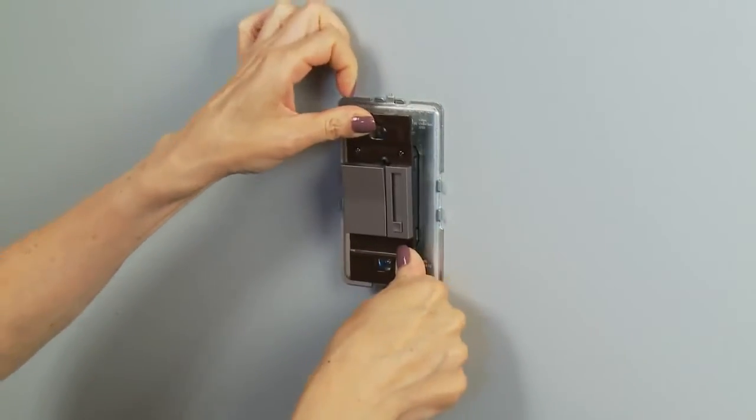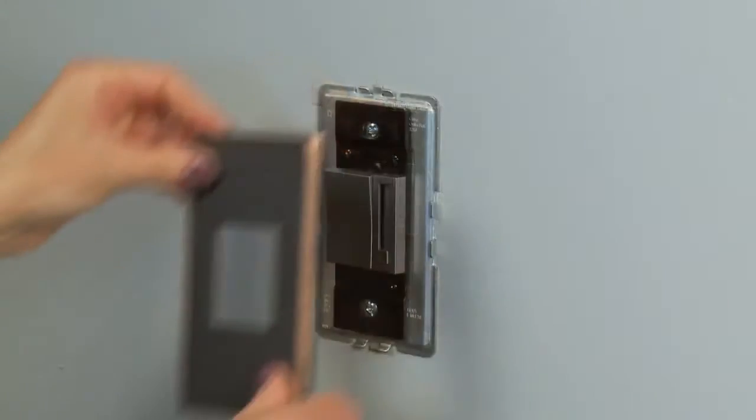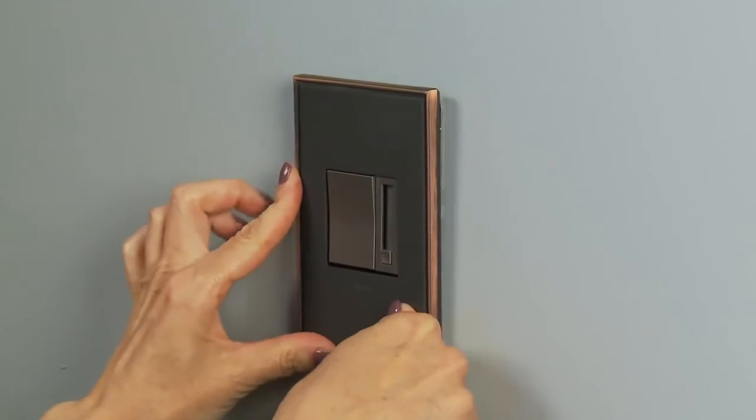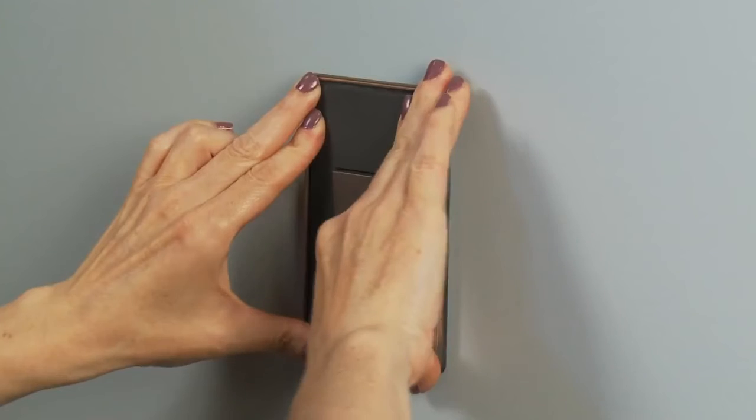Once your device is snapped into place, you can place the wall plate over the frame, making sure to push firmly on the top, bottom, and both sides of the wall plate.